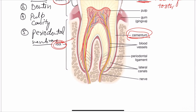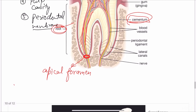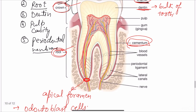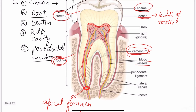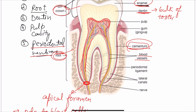Going downward, the canal is narrow at the root portion and opens at the apical foramen at the tip of the root. The pulp canal is lined by specialized cells known as odontoblast cells. The pulp cavity also contains connective tissue, arterioles, and nerve fibers — blood vessels, nerves, and arteries.